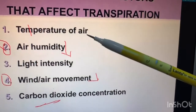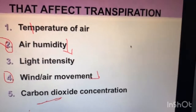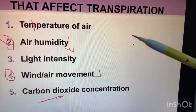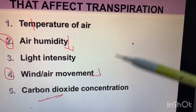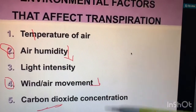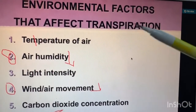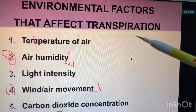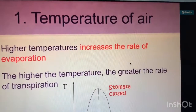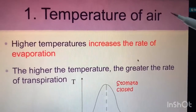The environmental factors that affect transpiration are: number one, temperature of air; number two, air humidity; number three, light intensity; number four, wind or air movement; and number five, carbon dioxide concentration. These five factors can affect transpiration, and we will discuss them one by one.